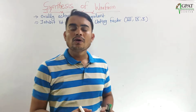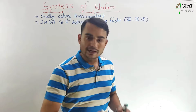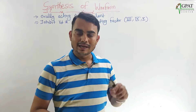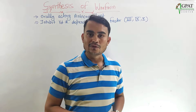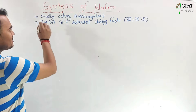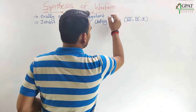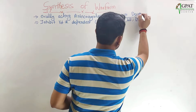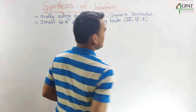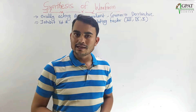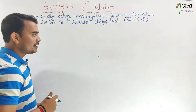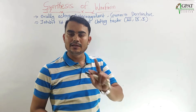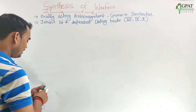I have previously made a video on the different coagulating factors with a very easy trick. You can find my previous lecture — I will give the link in the description. Warfarin is an orally acting anticoagulant and it is a coumarin derivative, because the main nucleus in this drug is the coumarin nucleus. The synthesis of warfarin is carried out in two steps.